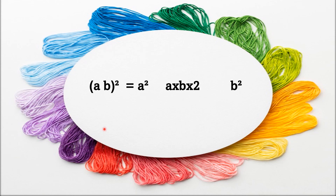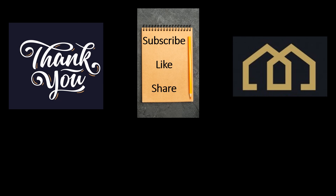So children, with this method you can find the squares of any 2-digit numbers. That is, for (ab) squared where a and b are any digits: the first part is a squared, the middle part is a into b into 2, and the last part is b squared. Please note, any carryover will be added to the previous numbers. Thank you all, see you soon in the next video.